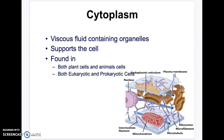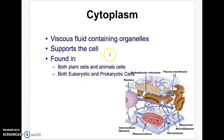Cytoplasm is that jelly fluid existing in every type of cell. It's found in plants and animals, prokaryotes and eukaryotes, and it's for supporting the cell — that jelly fluid inside.